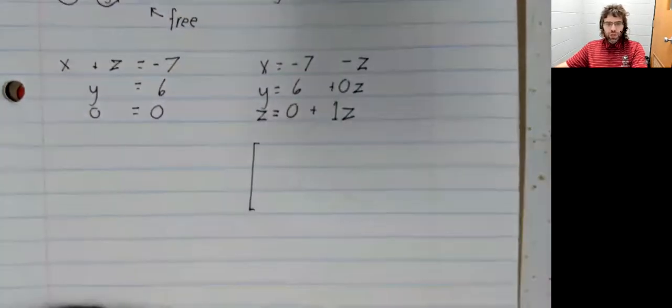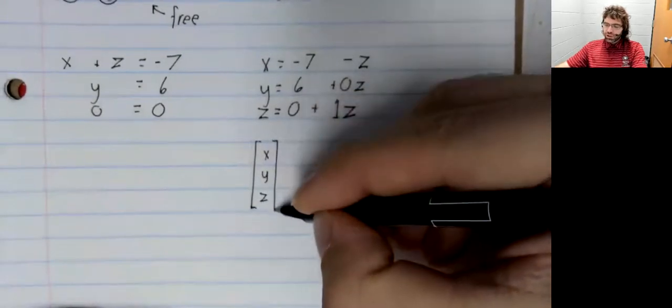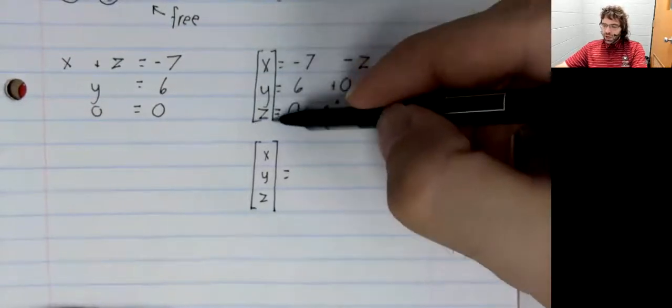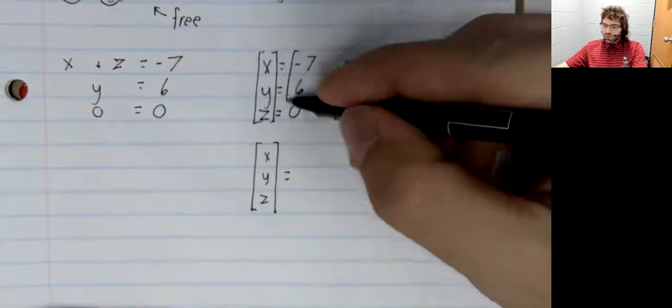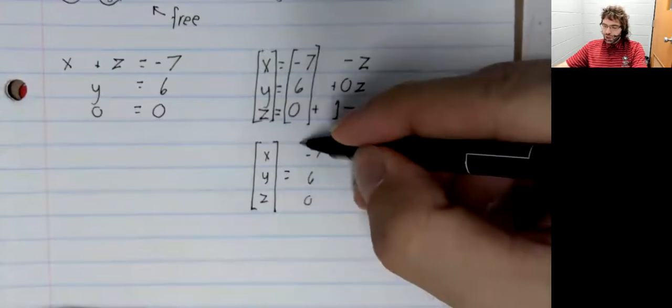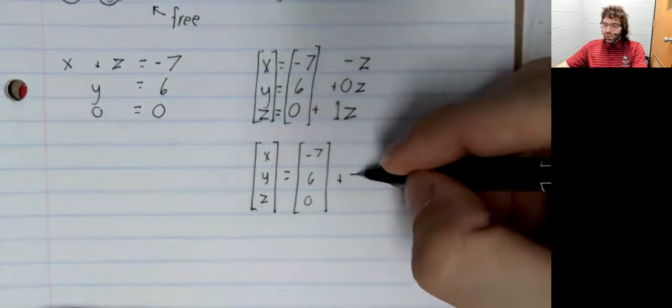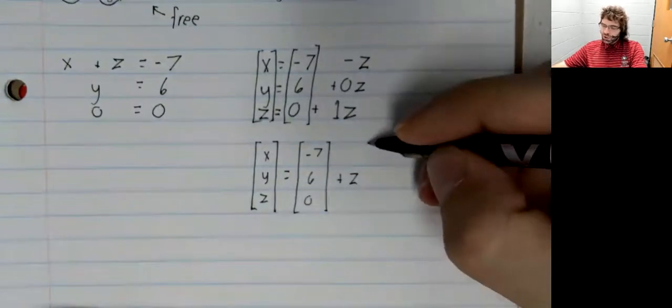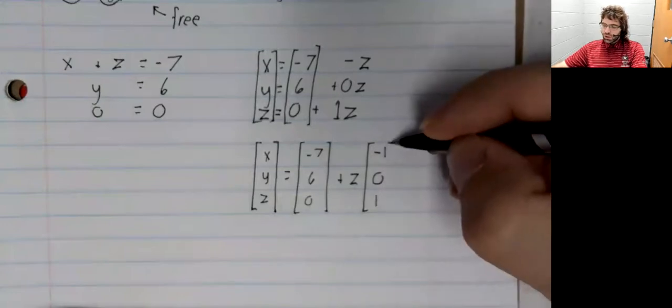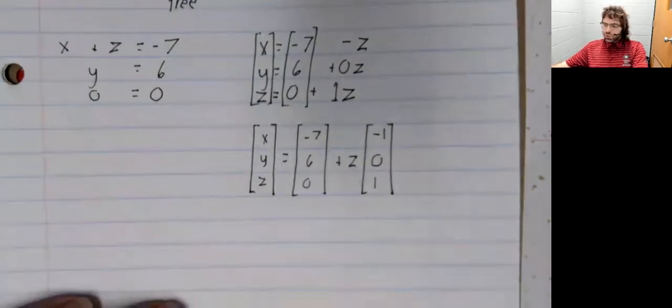And the point of doing this is that it lets you write a vector equation. X, y, z equals negative seven, six, zero, plus, and here we'll pull that z out, negative one, zero, positive one. And here's our solution set.